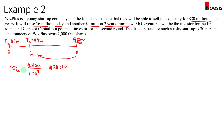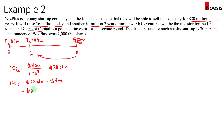At year two, the investment will be made by Camelot Capital. So the pre-money valuation equals the post-money valuation minus the investment made by Camelot Capital, which is four million dollars. Therefore, the pre-money valuation at year two will be twenty-four point zero one million dollars.